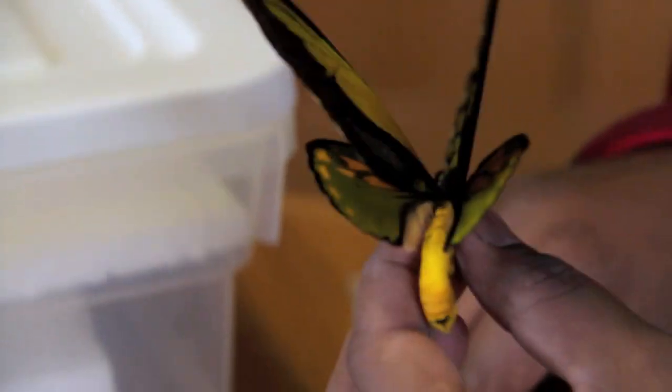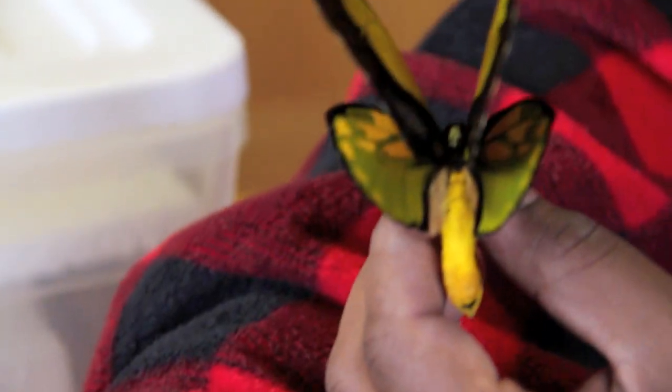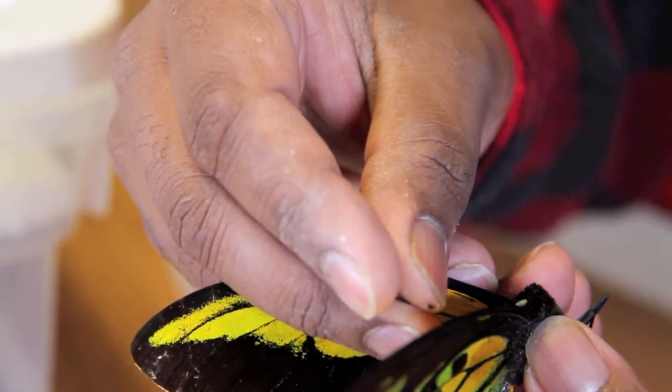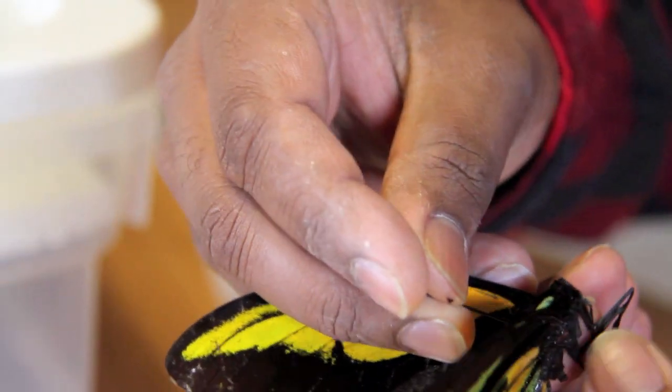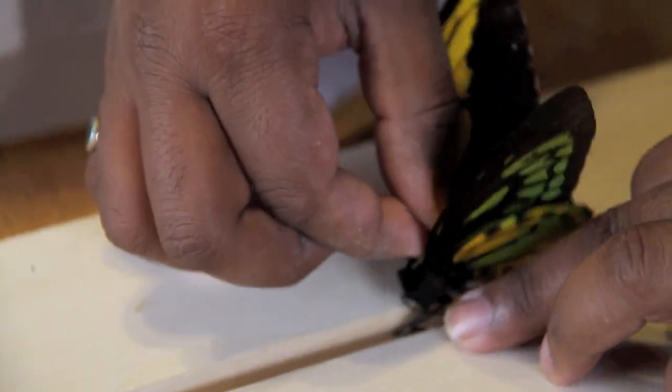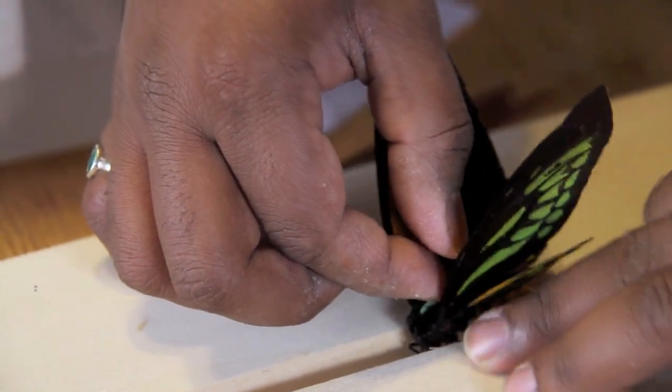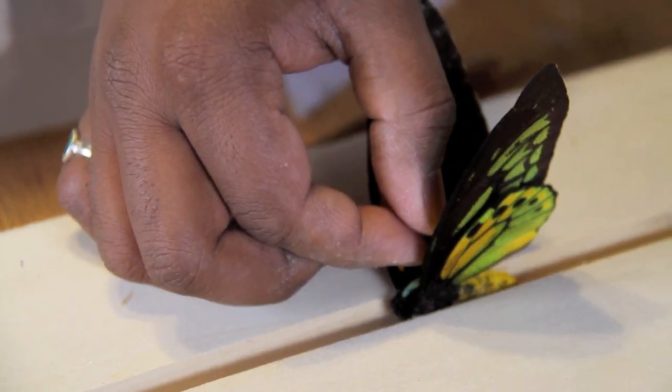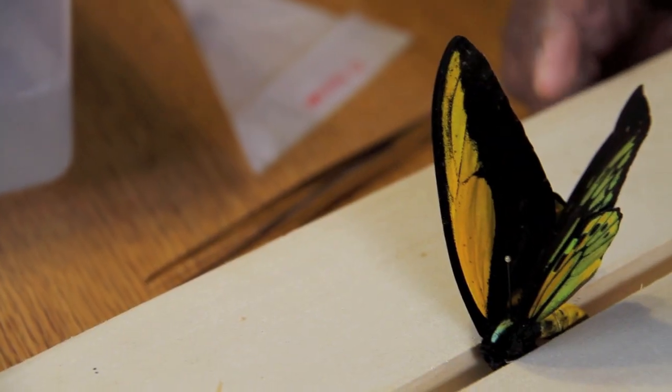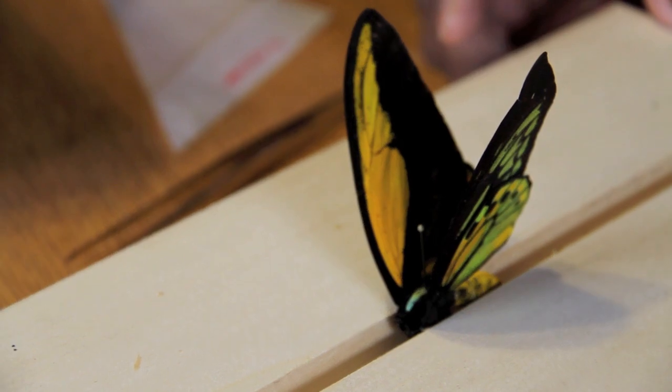Now, what I'm going to do is I'm going to place a pin directly into the thorax. I want the pin to be perpendicular to the body. I'm going to place the specimen into the groove. I've already preset the groove to the proper width so that I'm able to place the specimen easily within there.